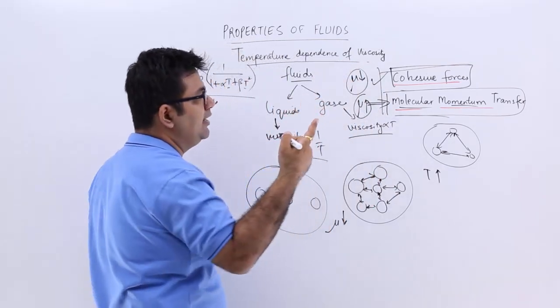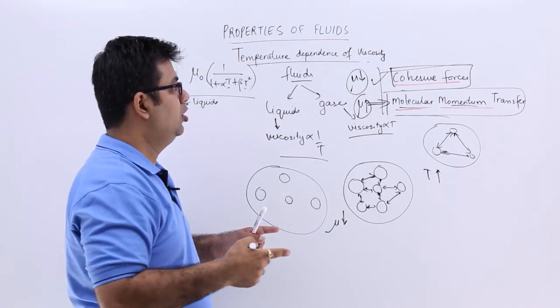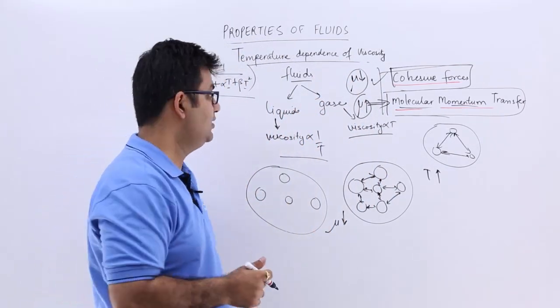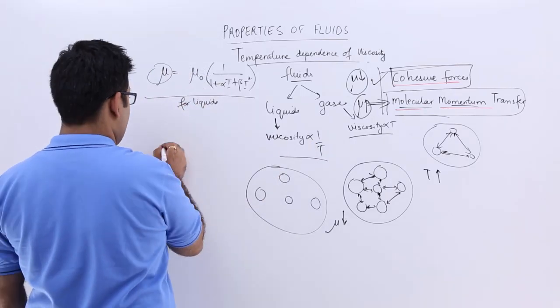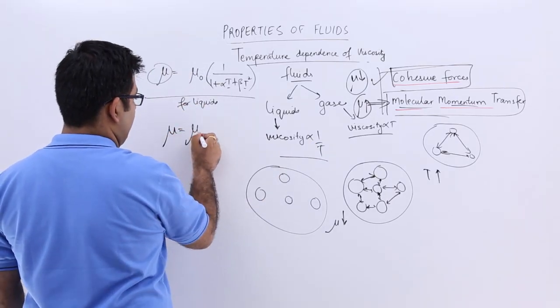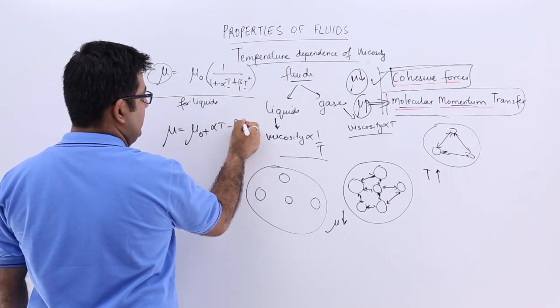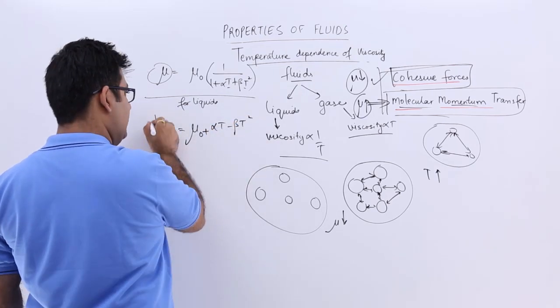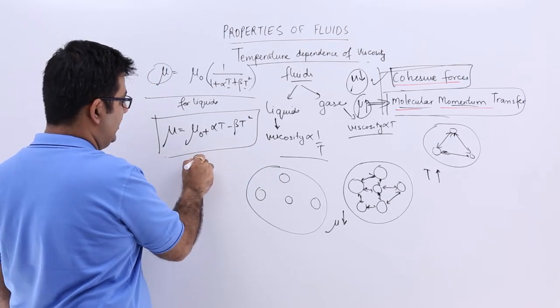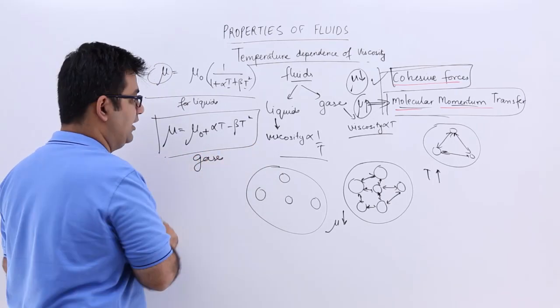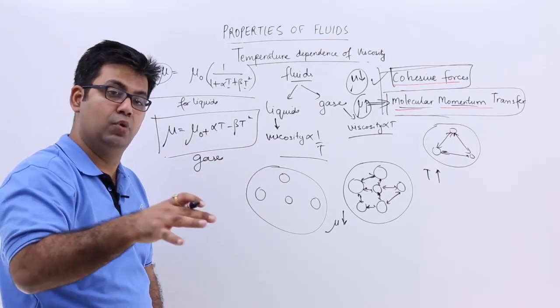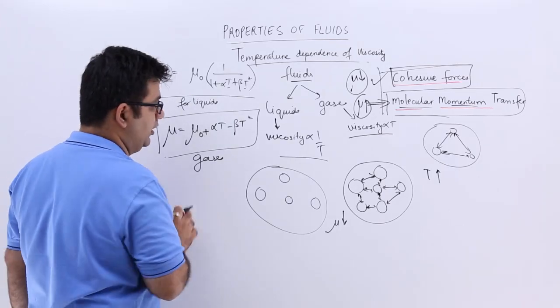So I hope you got the temperature dependence of viscosity for liquids and gases. For gases, if I have to give a mathematical formula, I would write mu plus alpha T minus beta T square. This is the relationship with temperature or the value of mu as a function of temperature for gases.